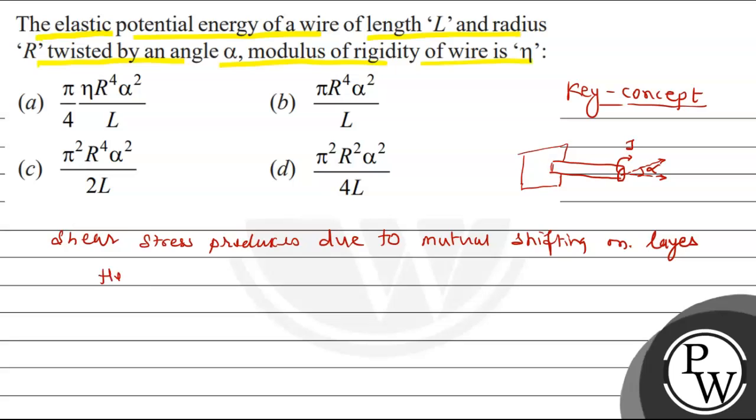The energy, total energy, equals torque square upon 4 eta into volume. We use the relation: torque upon radius equals eta alpha upon L, so torque equals eta alpha R upon L.